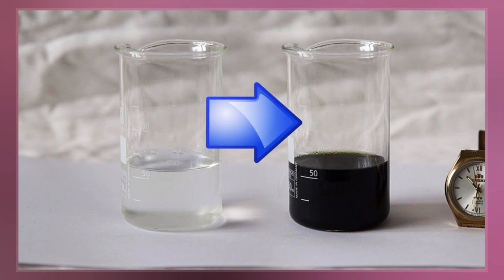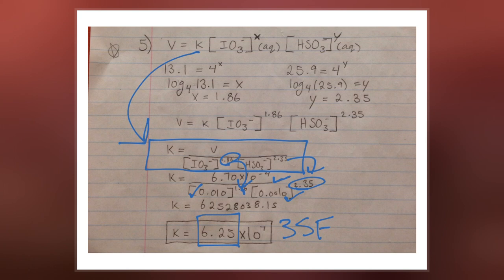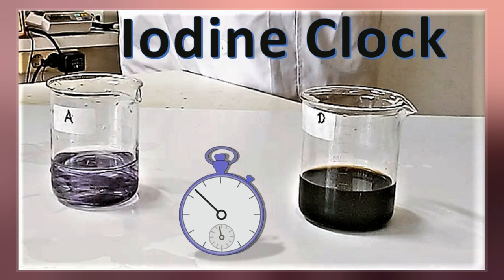Two colorless solutions are mixed, and at first there is no visible reaction. After a short time delay, the liquid suddenly turns to a shade of dark blue due to the formation of a triiodide-starch complex.